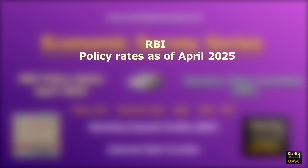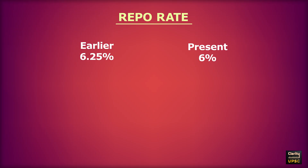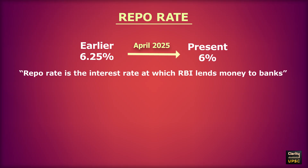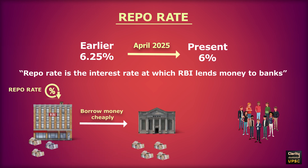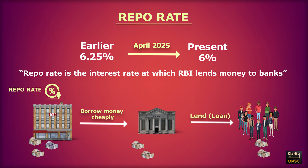Let us now start with all present policy rates as of April 2025. First is repo rate. It is currently 6%. Earlier it was 6.25%; in April 2025, it decreased from 6.25%. Repo rate is the interest rate at which RBI lends money to banks. If RBI reduces this rate, banks can borrow money cheaply, then lend more loans to people. This increases spending and helps the economy grow, but can also increase inflation.